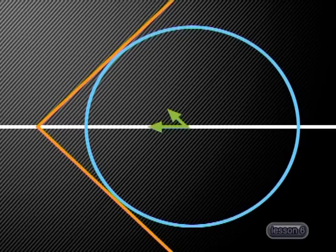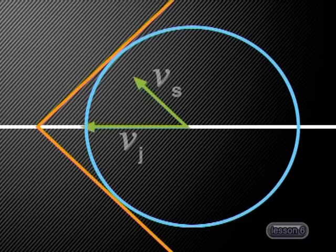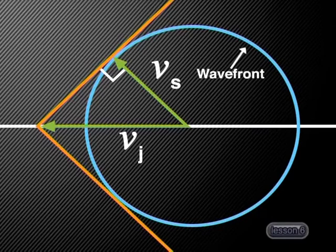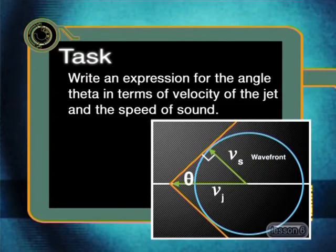To find the angle of the shock wave, we need to draw in the velocity vector Vj to represent the velocity of the jet and the velocity of the sound wave Vs, where it meets the V of the shock wave. From geometry, we know that the angle between a radius and the tangent to a circle is 90 degrees. So the triangle containing the velocity vectors for the jet and the sound is a right-angle triangle. Can you work out from this diagram how to use trigonometry to write an expression for the angle theta in terms of the velocity of the jet Vj and the speed of sound Vs?